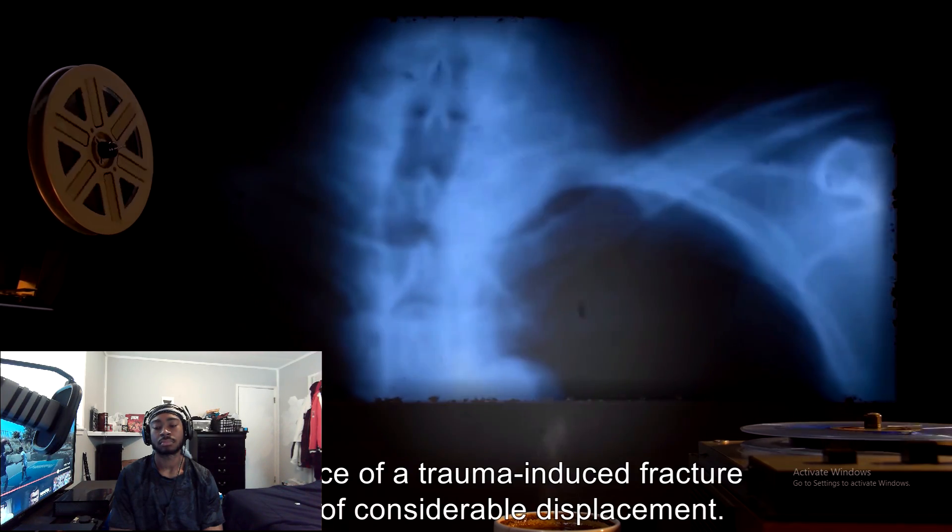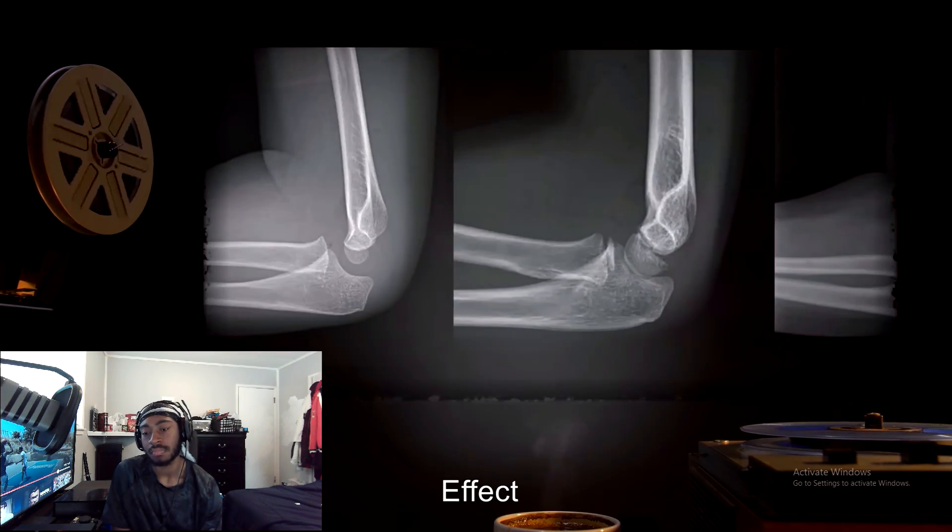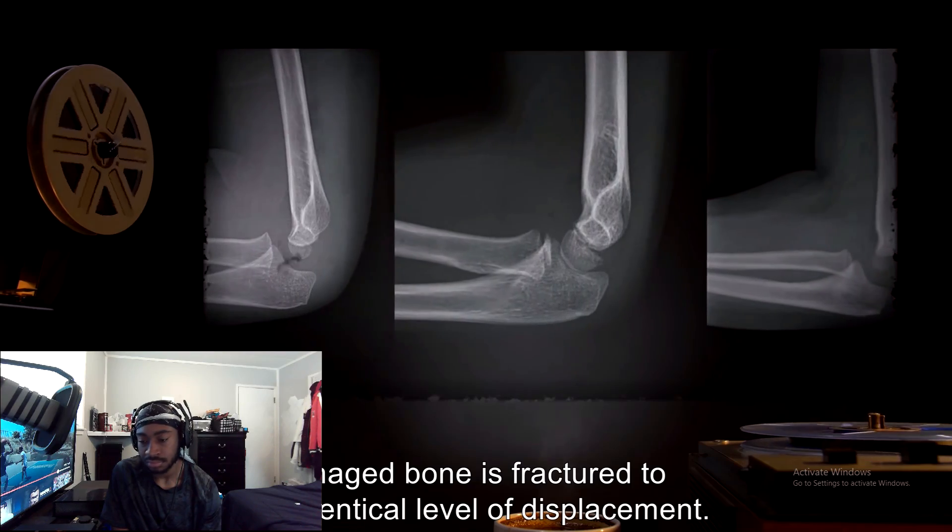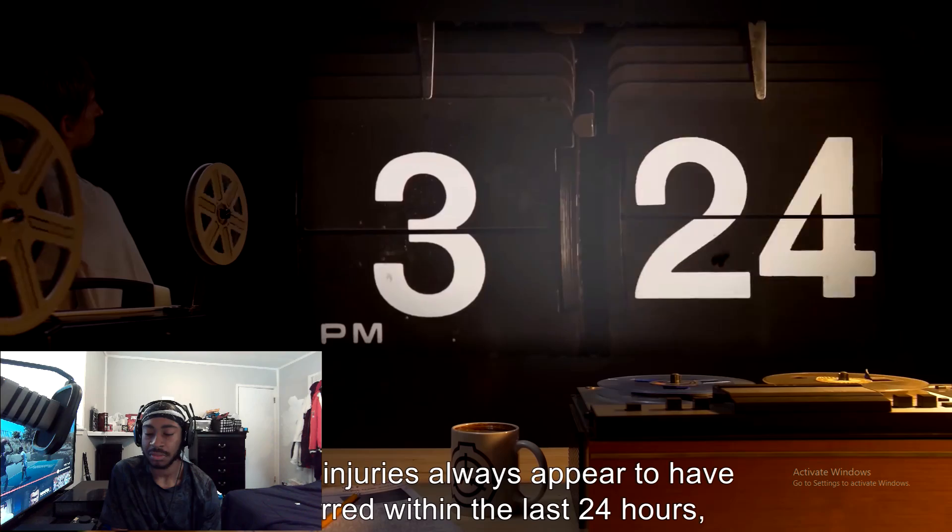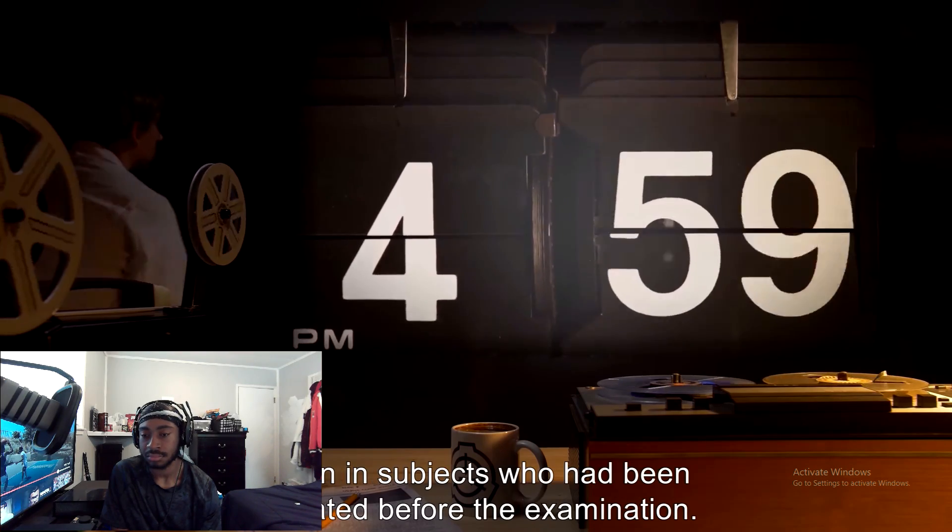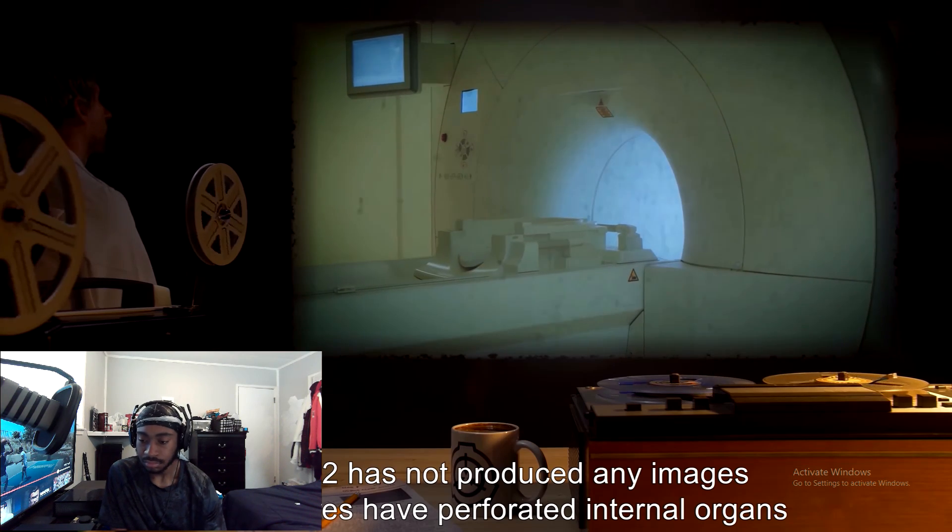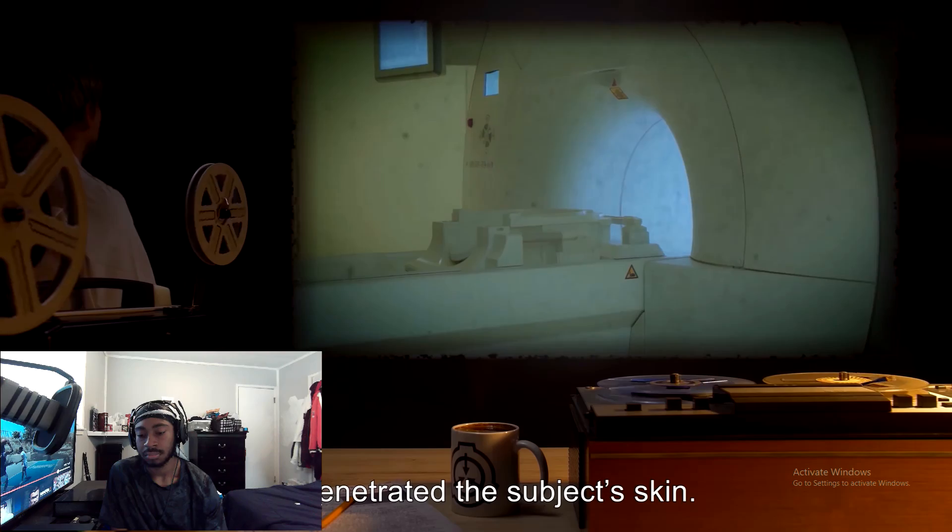Image result: Presence of a trauma-induced fracture injury of considerable displacement. Effect: Imaged bone is fractured to an identical level of displacement. These injuries always appear to have occurred within the last 24 hours, even in subjects who had been isolated before the examination. So far, SCP-192 has not produced any images where bones have perforated internal organs or penetrated the subject's skin.